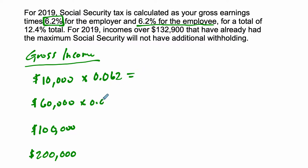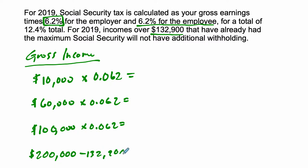And then we'll repeat the process every single time until we get to the situation where there's a cap. For the cap, let's view what that says. It says: for incomes over $132,900 that have already had the maximum Social Security will not have additional withholding. So the $200,000 would actually first subtract $132,900 from it, and that amount will have no additional Social Security tax taken from it.